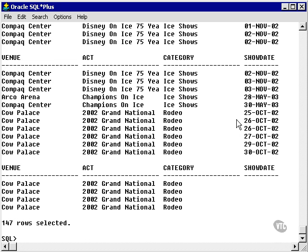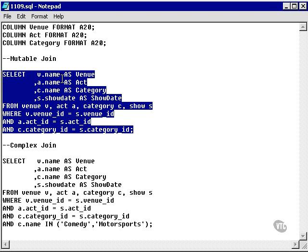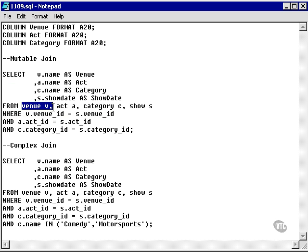I've got 147 rows as a join between the venue, act, category, and show tables linked by venue, act, and category IDs.